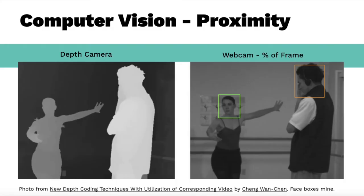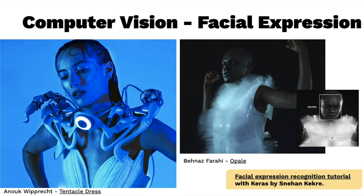Computer vision can be an extremely useful way to trigger interactivity. Using libraries like OpenCV and a camera, you can detect movement, the number of people in a room, how many people are smiling, what color shirt everyone's wearing, or specific gestures. Computer vision can also be used for proximity by examining the distance between faces, tops of blobs, and the ratio of the face to determine distance from camera. For an easier approach, try purchasing a Kinect, OpenMV, or RealSense camera, which come with software to help you develop your program. Two interesting wearable projects use computer vision for facial recognition — one by Inukwaprecht featuring tentacles that wiggle when a face is detected, and Opal by Benaz Farahi featuring spikes that respond to facial expression.